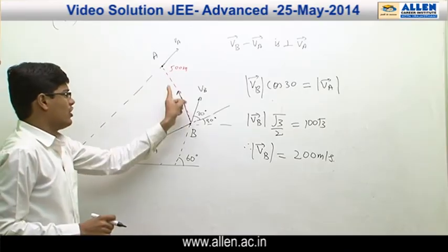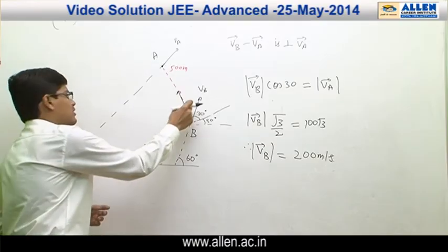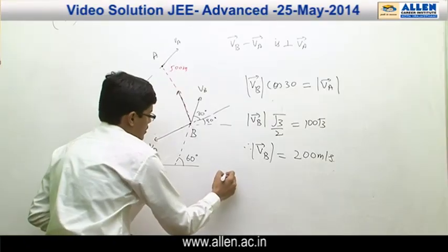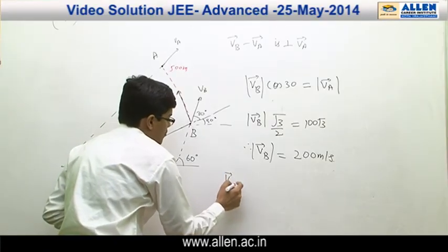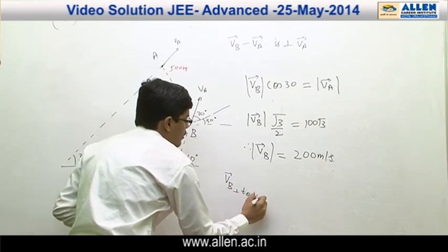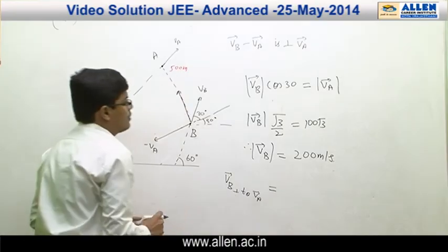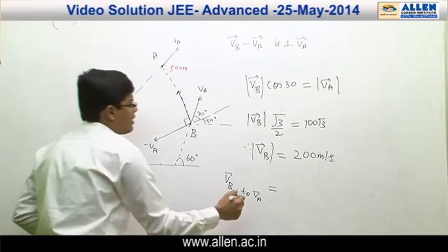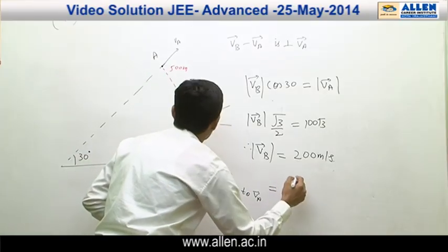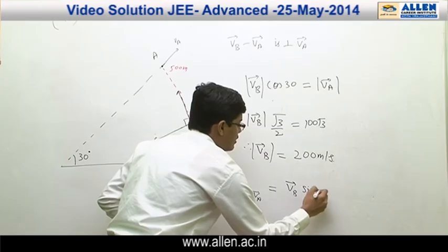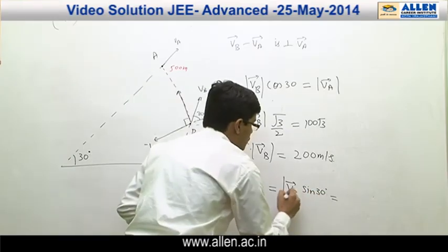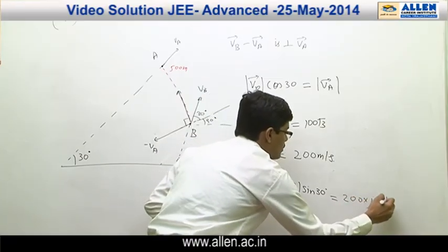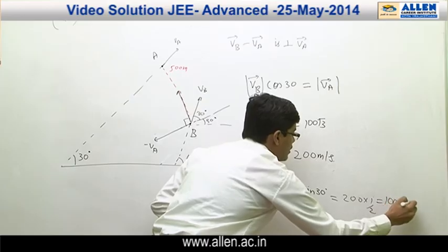Now, as seen from A's frame, the velocity of vB is in that direction. The component of vB perpendicular to vA — since the parallel component cancels — is vB sin30°, which equals 200 × (1/2) = 100 meters per second.